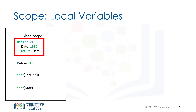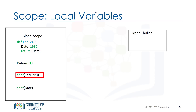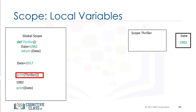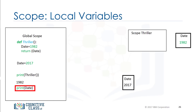Consider the function thriller. The local variable date is set to 1982, and the global variable date is set to 2017. When we call the function, we create a new scope. Within that scope, the value of date is set to 1982. If we call the function, it returns the value of date in the local scope — in this case, 1982. When we print in the global scope, we use the global variable value. The global value of the variable is 2017, therefore the value is set to 2017.